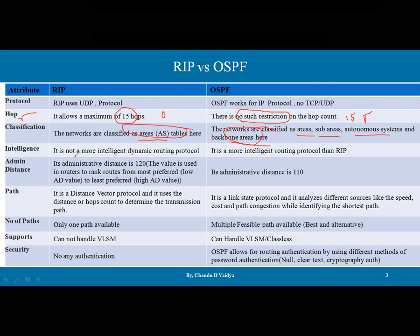Regarding intelligence, RIP protocol is not a very intelligent dynamic protocol. OSPF is a more intelligent routing protocol than RIP, because of the details and mechanisms we have discussed in the theoretical portion.